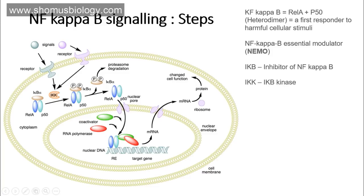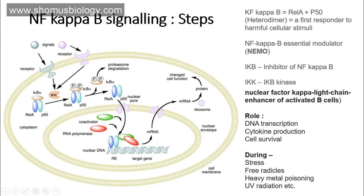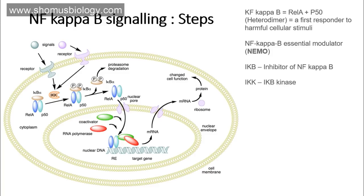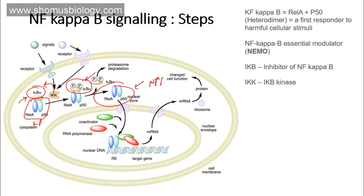IKB-alpha acts as an inhibitor blocking REL-A and P50 from functioning. Once IKK is activated by signaling, it phosphorylates IKB-alpha. Once IKB-alpha is phosphorylated, that phosphorylated form attracts ubiquitination and proteasome-mediated degradation. Upon phosphorylation, IKB-alpha is degraded by the proteasome, thus rendering the REL-A and P50 complex — NF-kappa B — free.